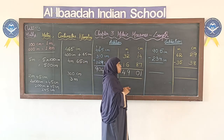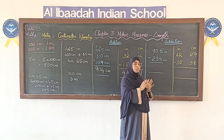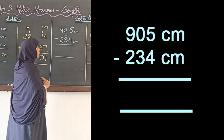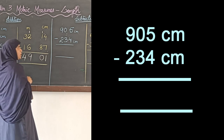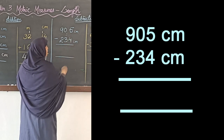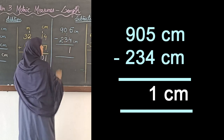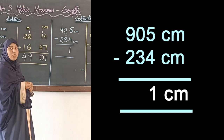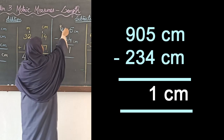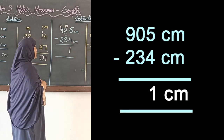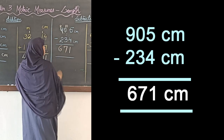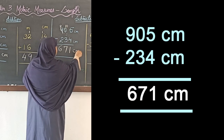For subtraction, we also follow no special rule — it is usual subtraction with borrowing. Example: 905 cm minus 234 cm. Ones place: 5 − 4 = 1. Tens place: 0 − 3 is not possible, so borrow from the 9, making it 8 and giving 10 in the tens. 10 − 3 = 7. Hundreds place: 8 − 2 = 6. Answer: 671 centimeters.